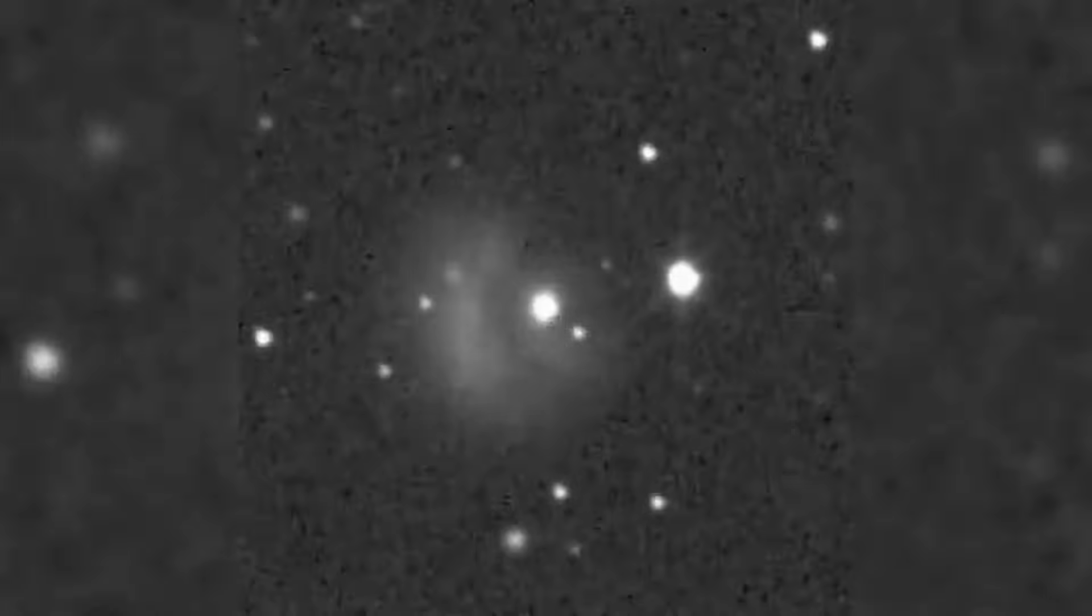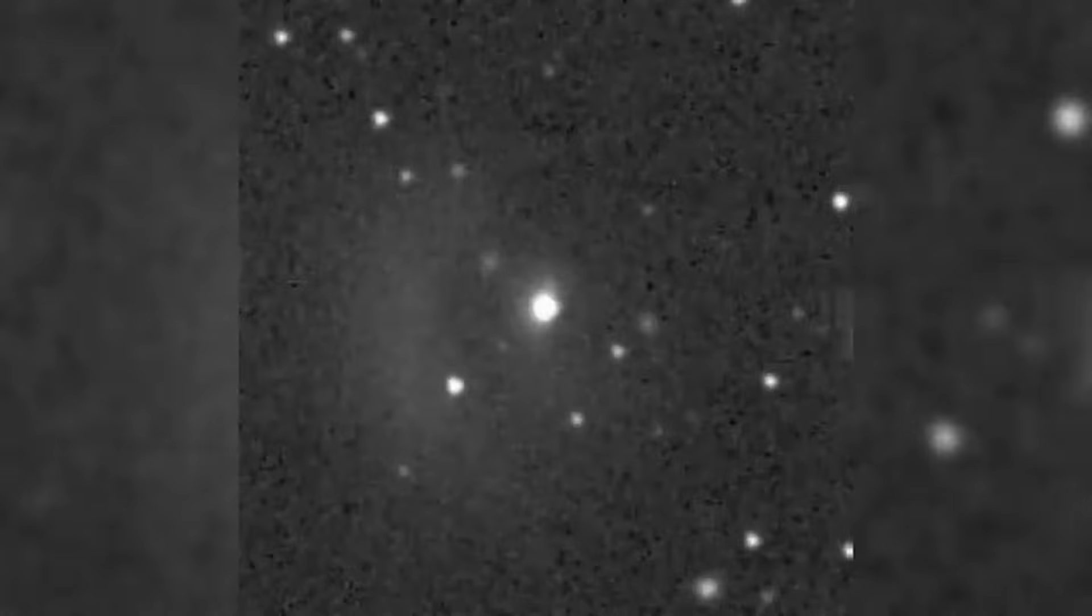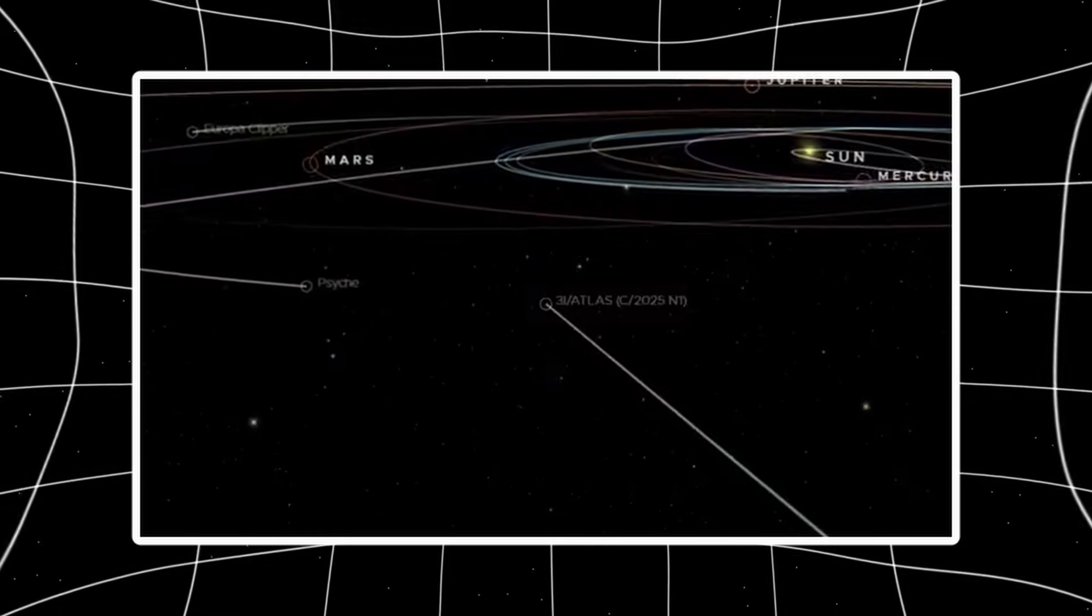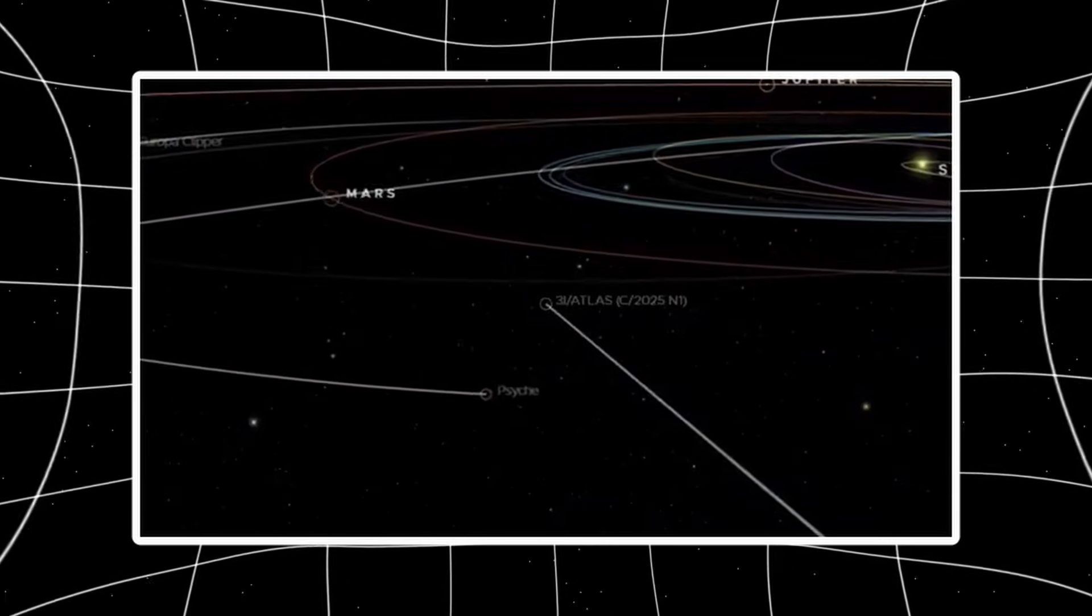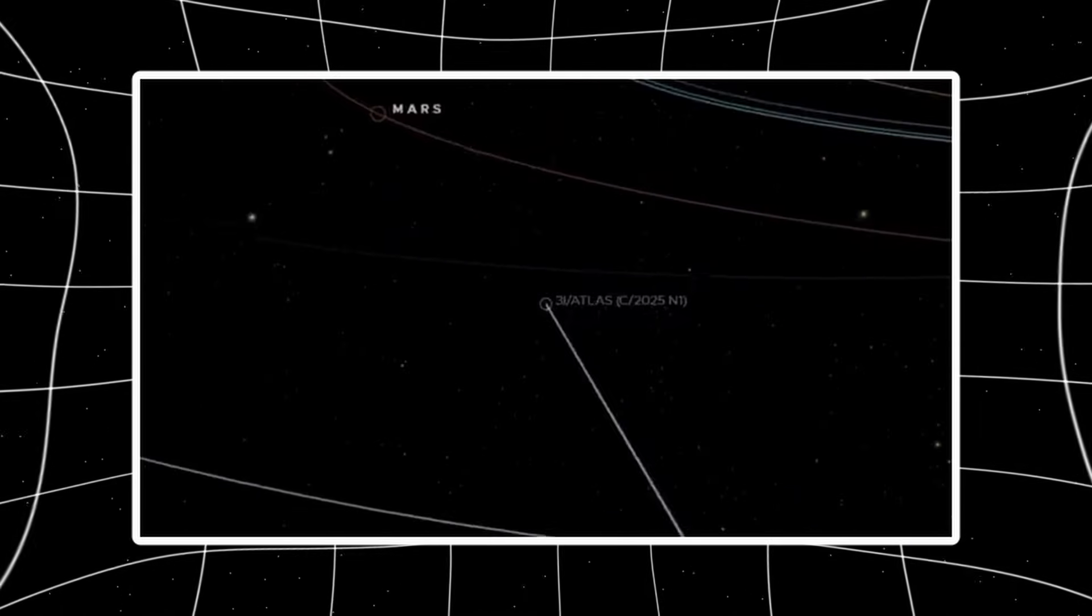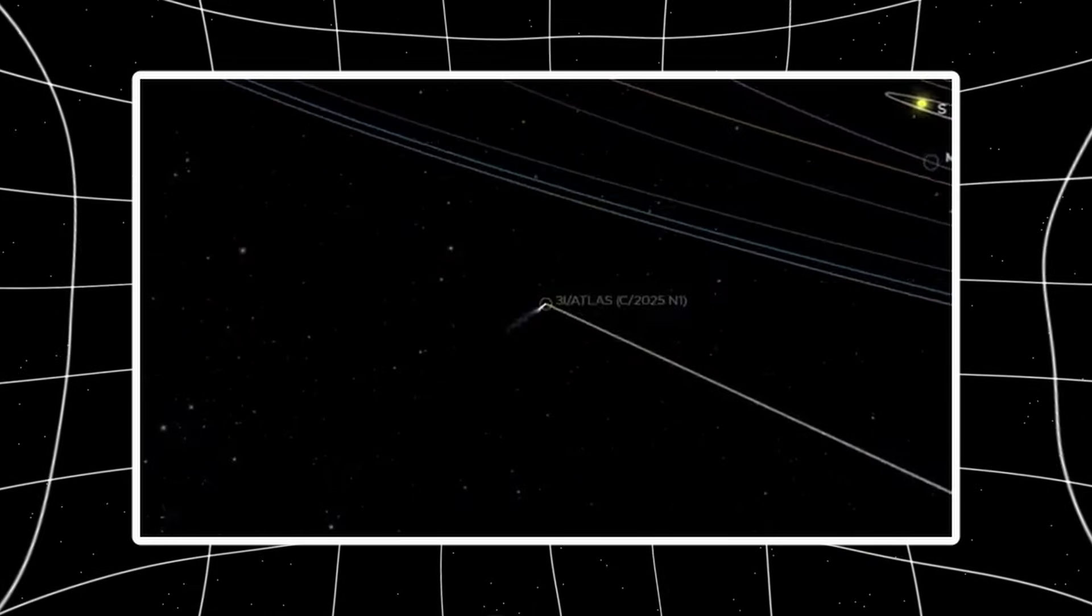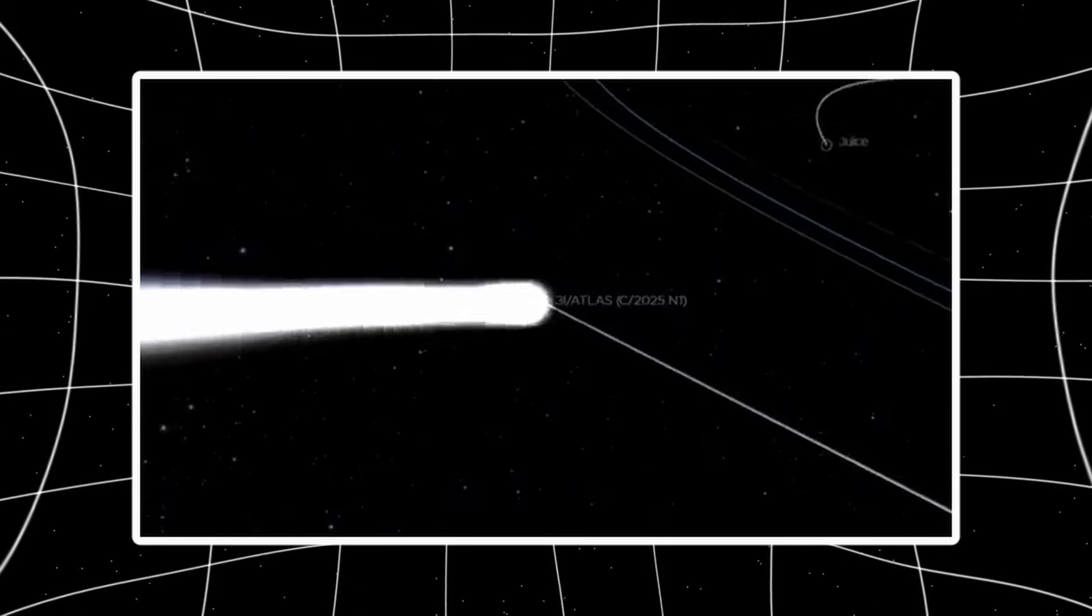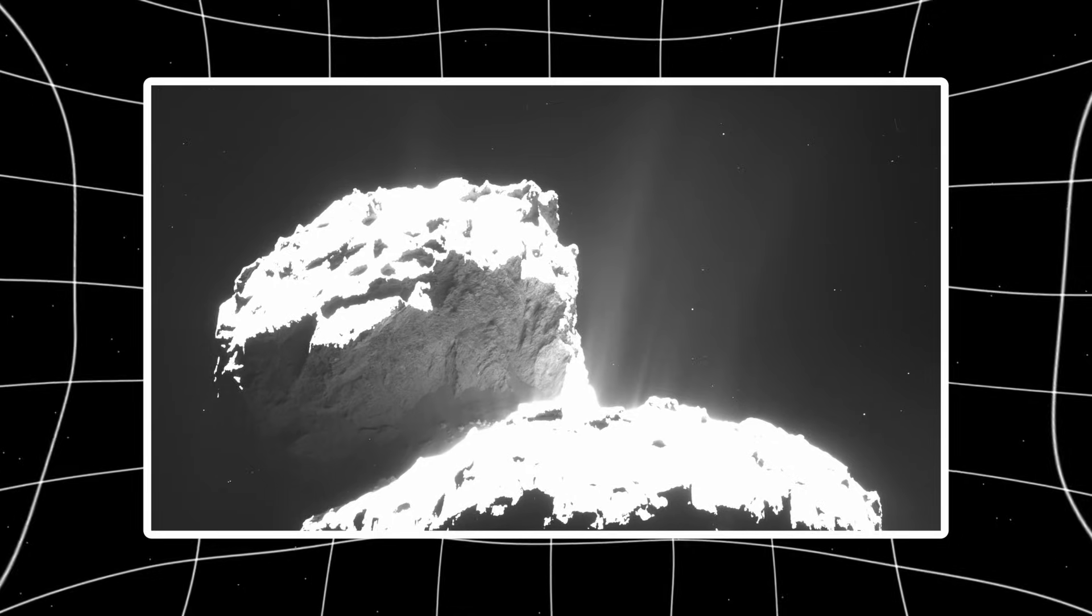And yet, for something that's supposed to be a dying comet this far from the sun, it's still there. Still visible. Still trackable. Most comets at 2 AU post-perihelion have already faded into background noise. The activity drops, the coma collapses, the whole show ends. 3i Atlas didn't get that memo. It's still producing enough material to show up on backyard equipment under less than perfect conditions. That alone should tell you something's different here. But it's not proof. It's just observation. And observation without context is just a pretty picture.